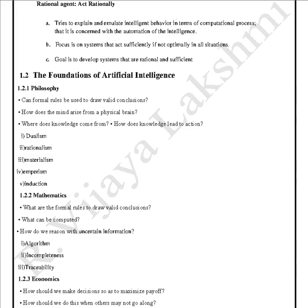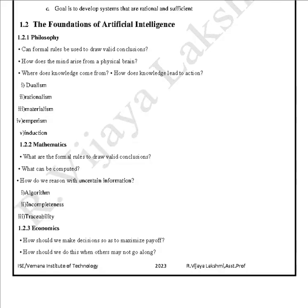First is philosophy — how this contributed to the improvement in AI. Philosophy asks: can formal rules be used to draw valid conclusions? What rules can be used to come to certain conclusions using philosophy in order to develop intelligent systems? How does the mind arise from a physical brain, where does knowledge come from, and how does knowledge lead to action?